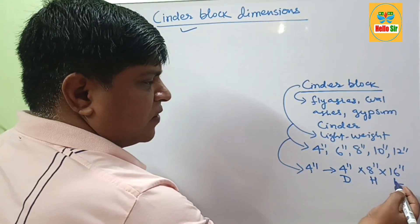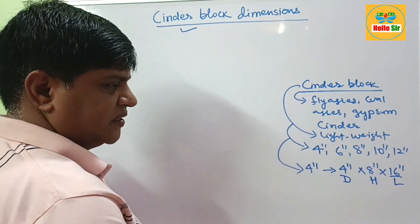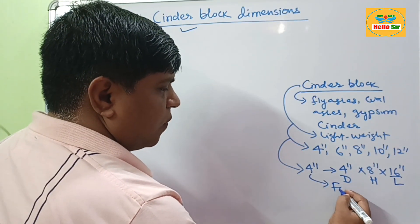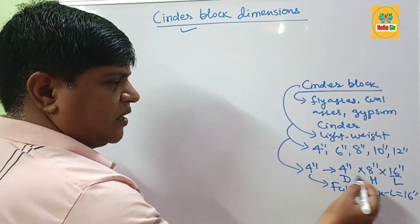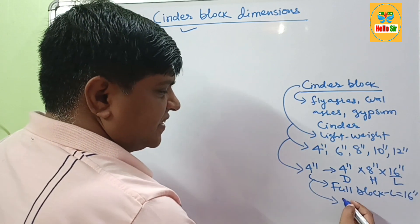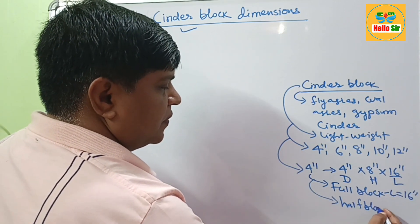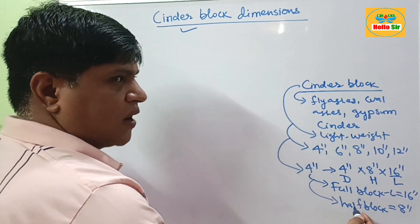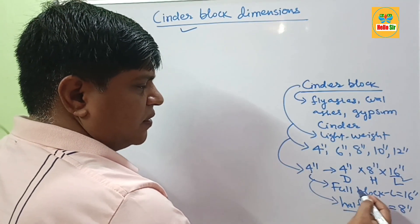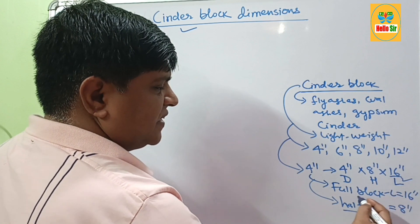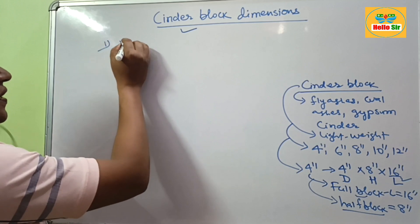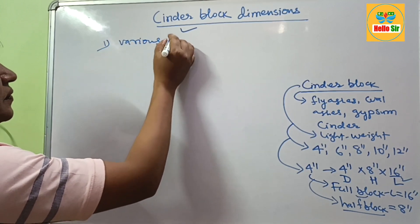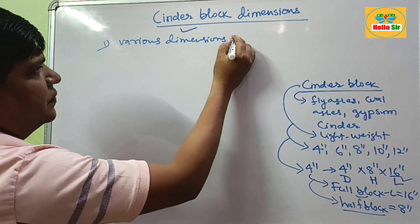If the length of a Cinder Block is 16-inches, this is called a Full Block. Now let's move on to the topic of various dimensions of Cinder Block.